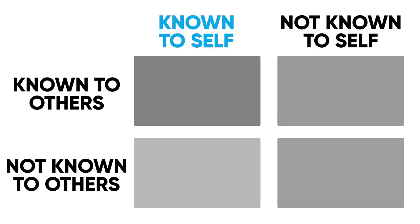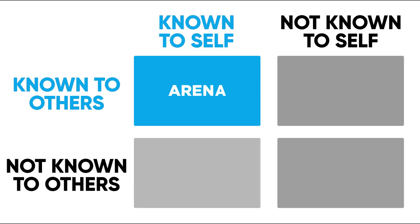Let's take the first pane of the window. The first pane is what you can say is you know and the world knows. This is also sometimes referred to as the arena — the area that is our greatest scope of understanding. This is the area we want to expand as much as possible because it represents leaning into knowing more about ourselves and being authentic, so the world sees us in the exact same reflection as we see ourselves.